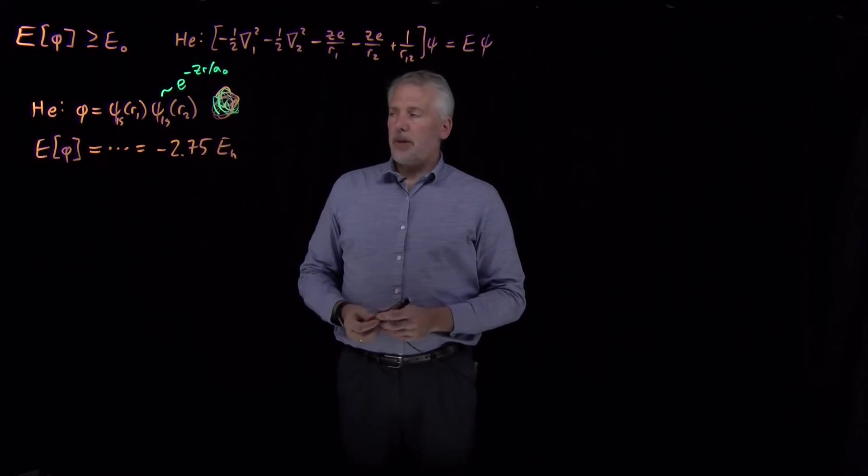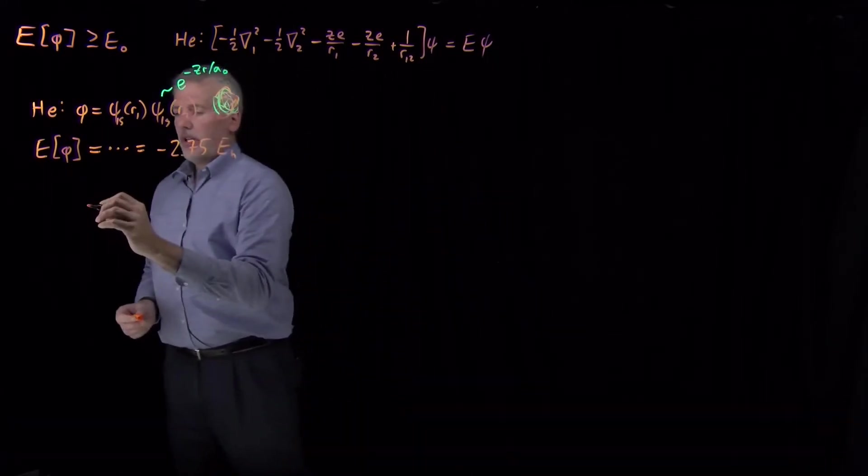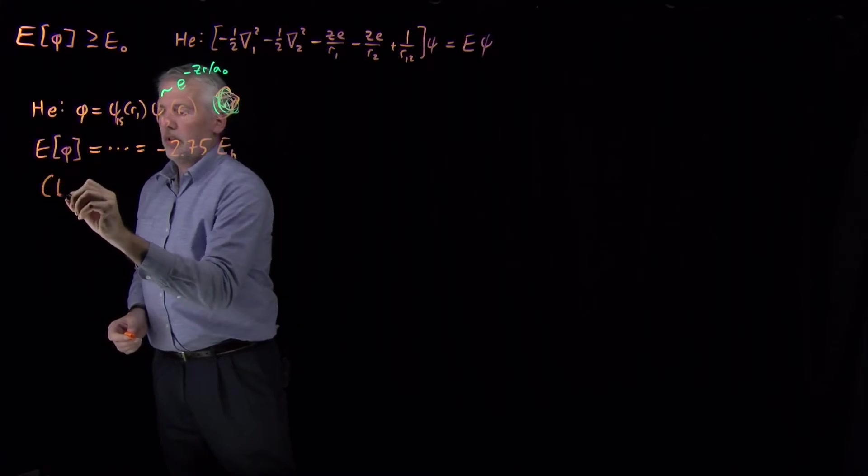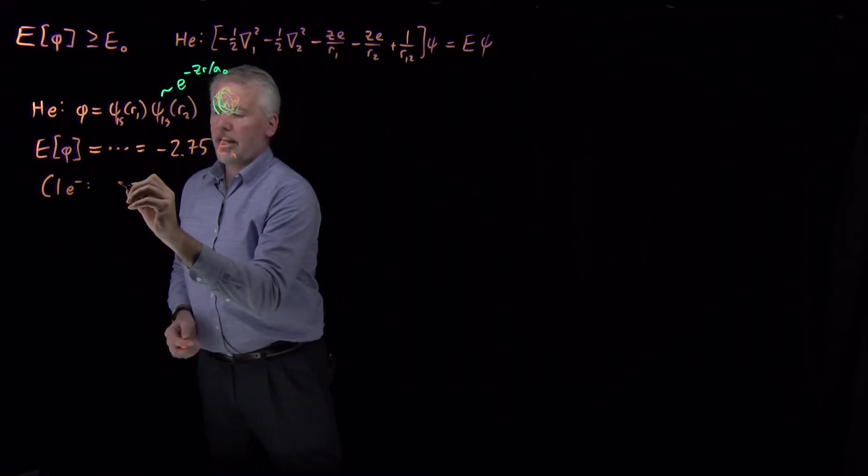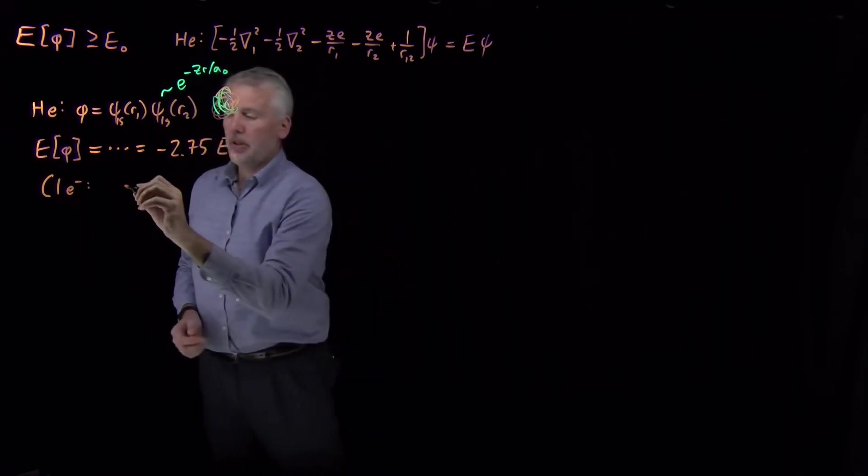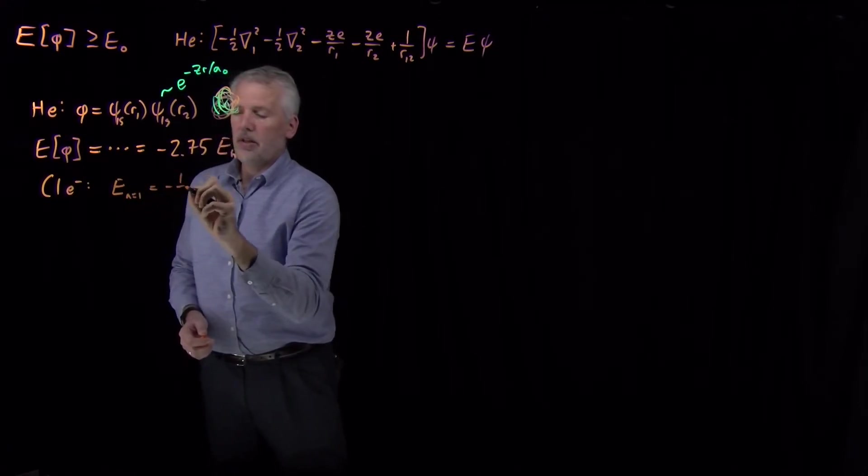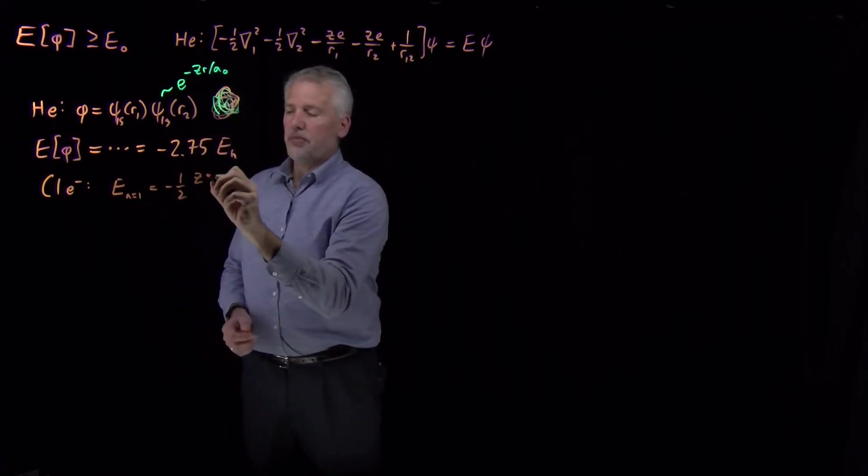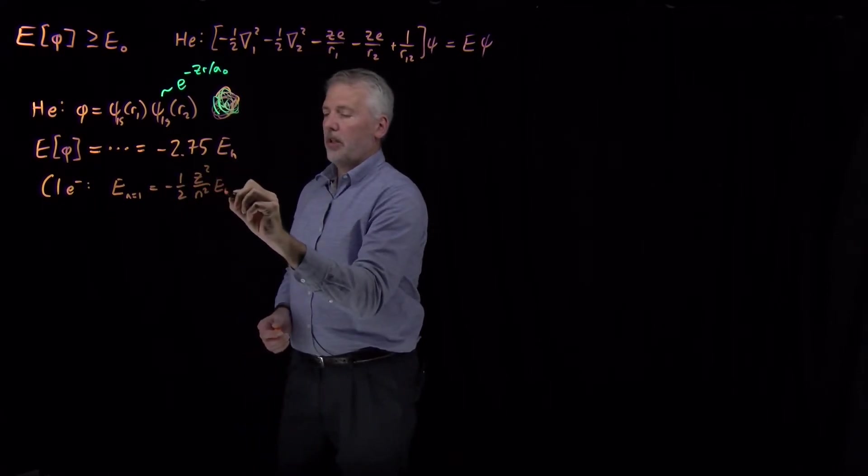We know that it's bound to be higher than the true energy of the ground state wave function. We don't know how much higher or how much lower. A couple things to say about this number. We can say, first of all, if we had only a single electron, for a hydrogen-like ion, if I only had one electron around the helium nucleus instead of 2, the energy of the ground state, the n equals 1 ground state...